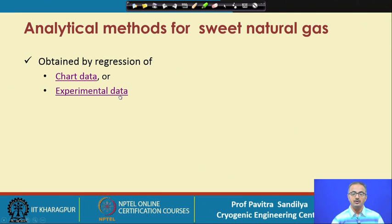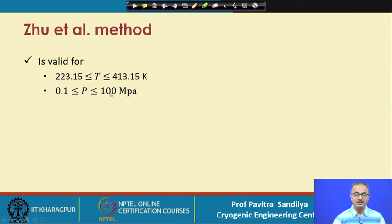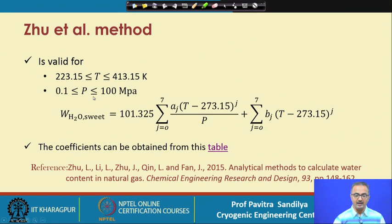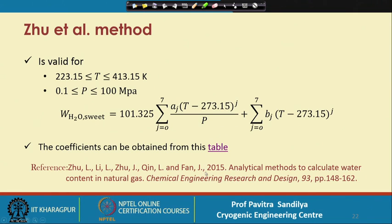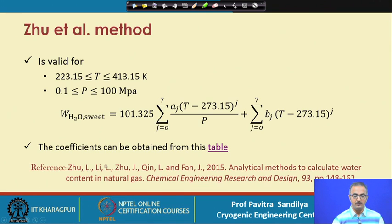Another method for sweet natural gas is proposed by Zhu et al., applicable within a specified temperature and pressure range. The expression for water content in sweet natural gas contains parameters A_j and B_j, which may be obtained from the table given by the authors. Using these A and B values, we can compute the water content in sweet natural gas.